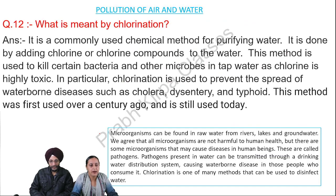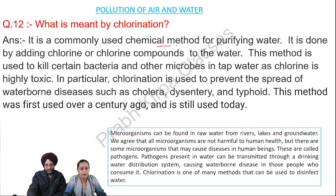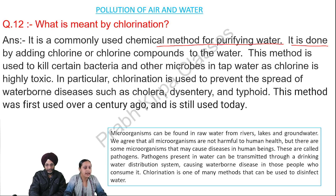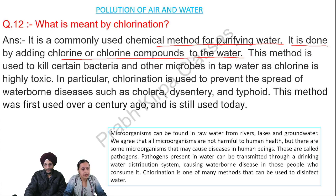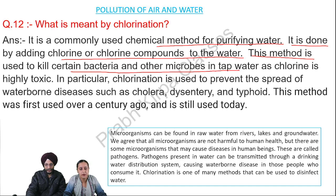What is meant by chlorination? It is a commonly used chemical method for purifying water. It is done by adding chlorine or chlorine compounds to the water. This method is used to kill certain bacteria and other microbes in tap water, as chlorine is highly toxic.